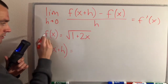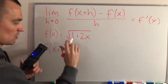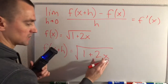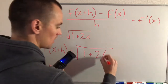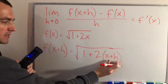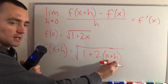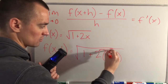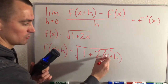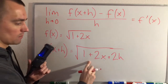Basically, all this notation is saying is go to your function f and replace the input with everything in parentheses. So we're going to take this function, which is the square root of 1 plus 2x, and replace x with x plus h. It's important to put x plus h in parentheses because whatever operations were being done to x now need to be done to the entire x plus h. So the 2 will distribute into those parentheses, leaving us with 1 plus 2x plus 2h. So f of x plus h is the square root of 1 plus 2x plus 2h.